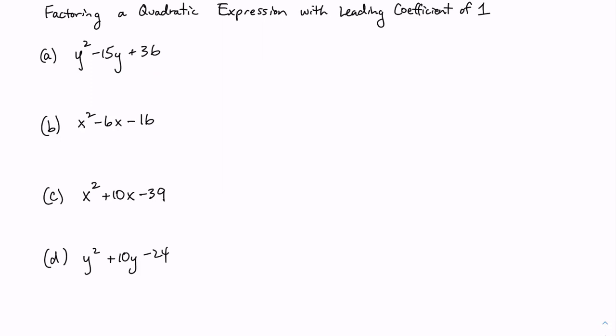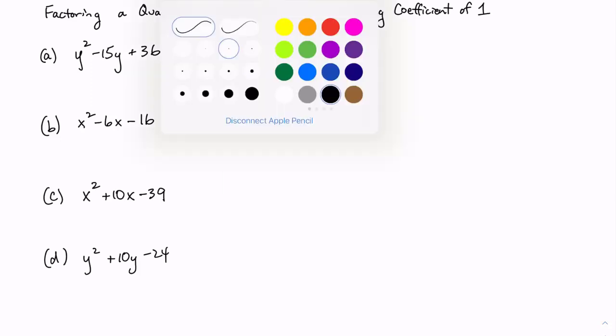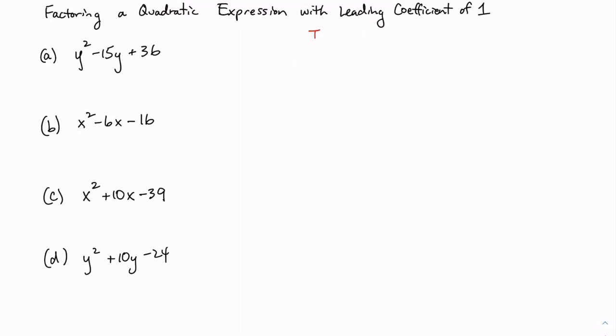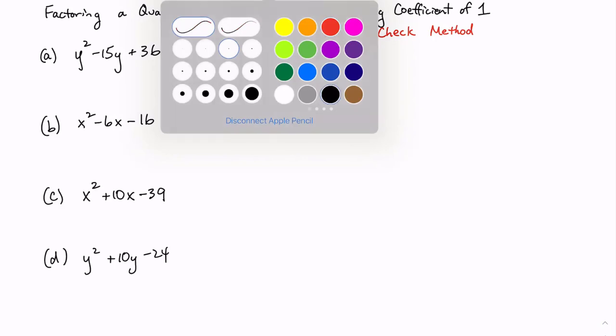So what we're going to do now is perform something called a trial and check method. For these trinomials, we're going to assume there's going to be two factors. In fact, we're going to assume that the factors are going to be two binomials. And we're basically going to go ahead and unwrap the FOIL method. Let's illustrate it with some examples.